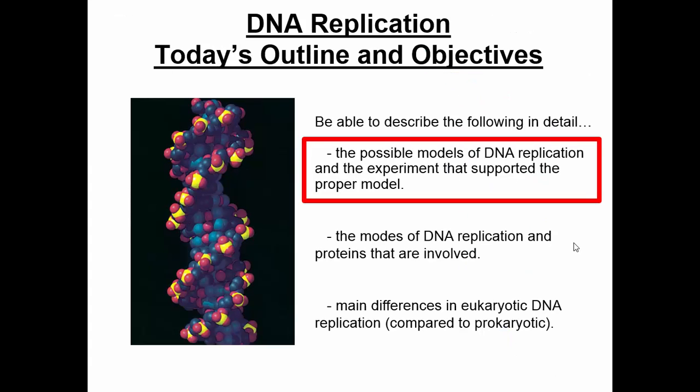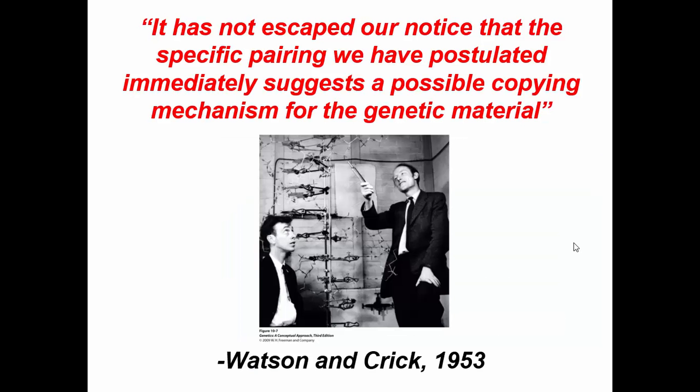So let's go ahead and talk about DNA replication now. Let's focus first on the different models of DNA replication. Watson and Crick, in their famous paper in 1953 on the structure of DNA, at the very end of their paper had a quote that said it had not escaped their notice that basically the structure of DNA might suggest the mechanism by which DNA is replicated. They didn't quite figure it out at that stage, but they alluded to the fact that structure would influence how it replicated.